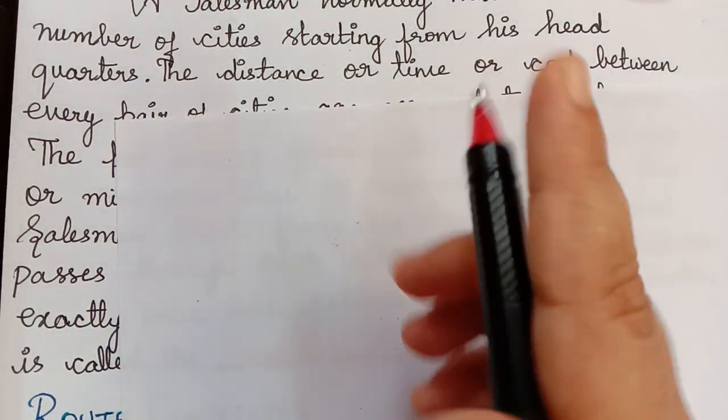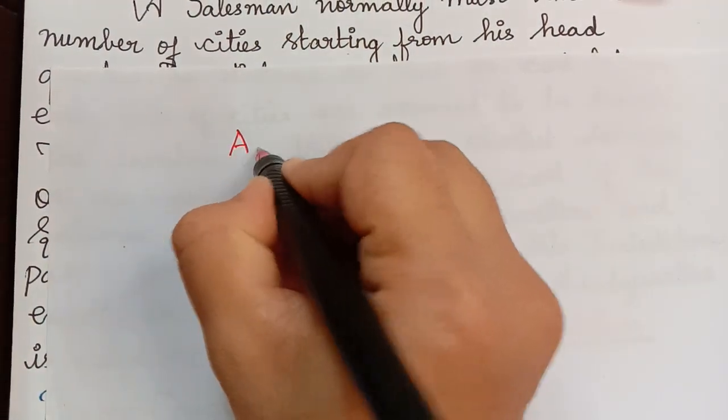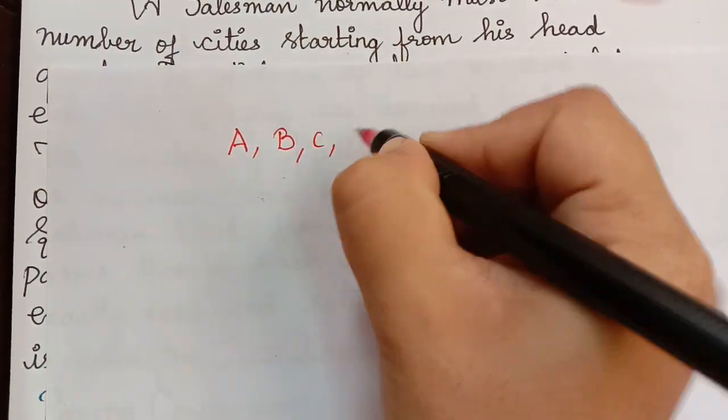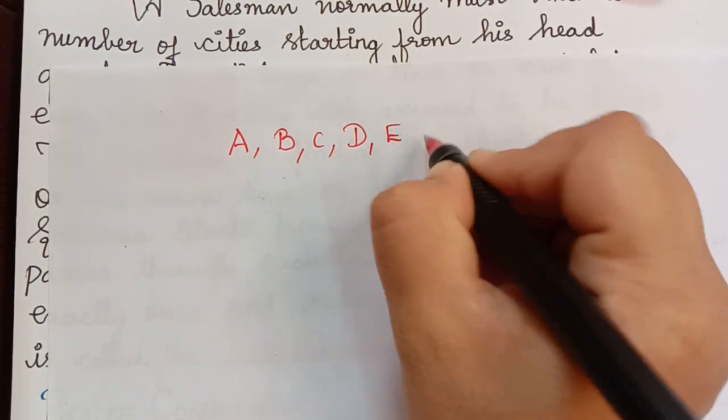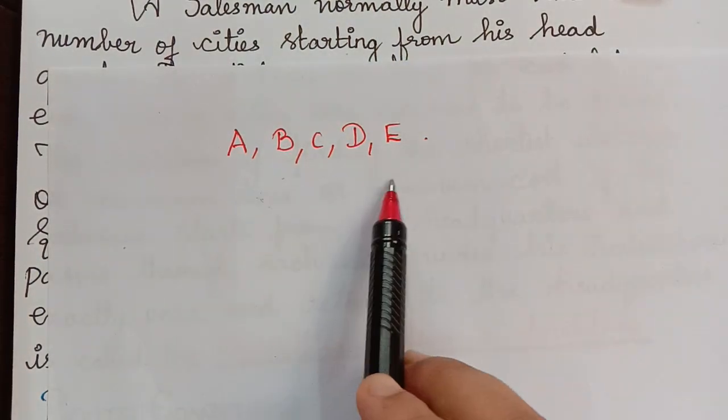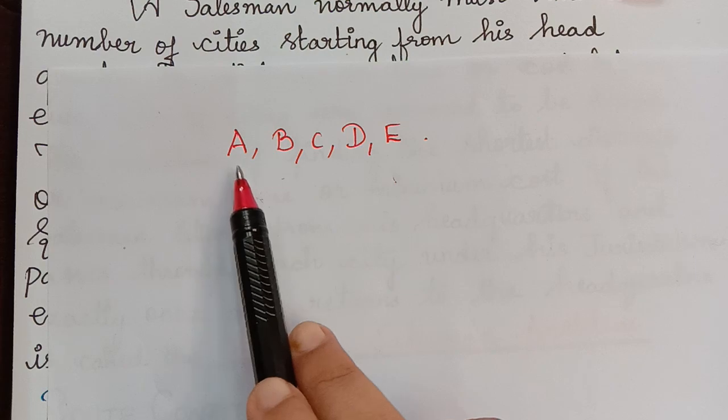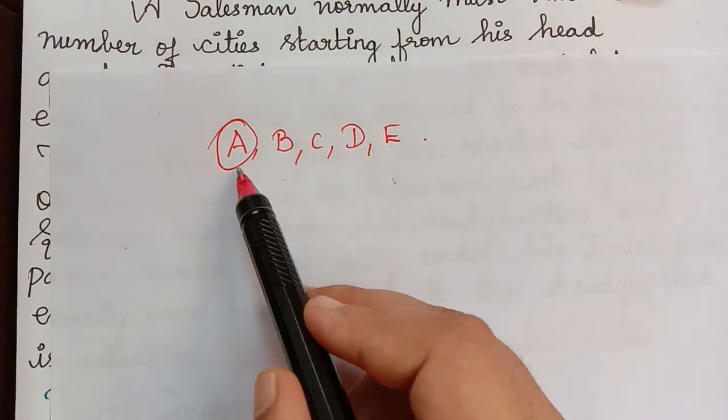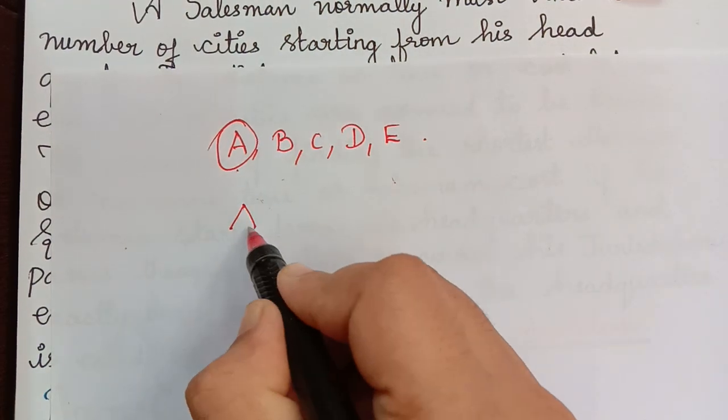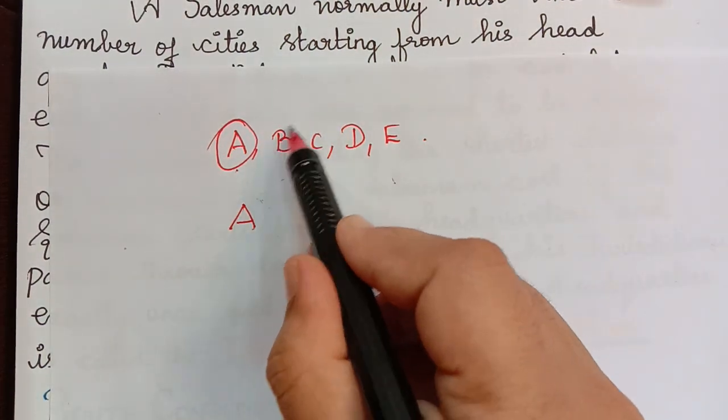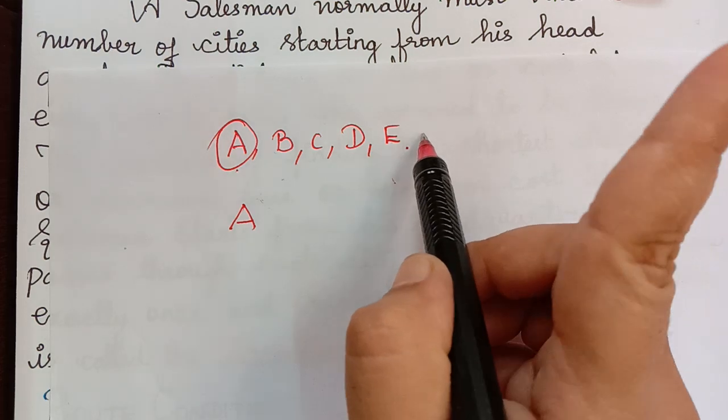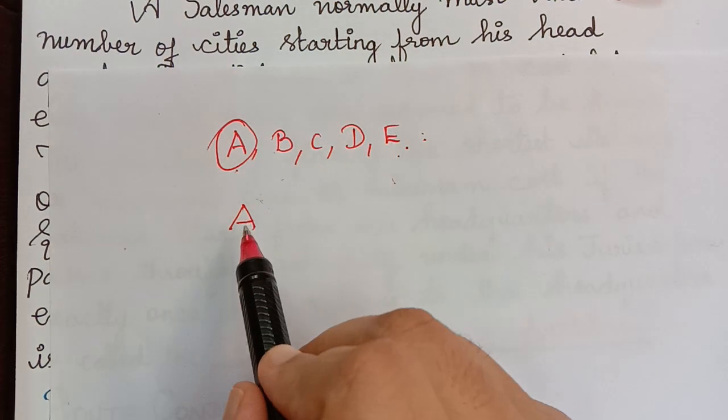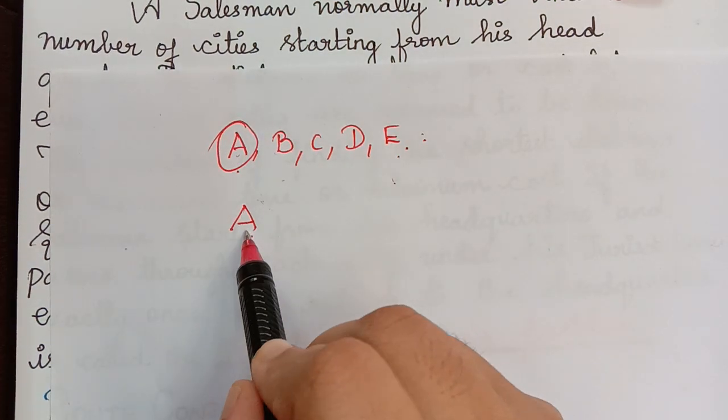For example, if A, B, C, D and E are the cities given and if we consider A to be the headquarters, then the traveling salesman when he starts from A has to visit every other city only once and he has to return back to his headquarters A.